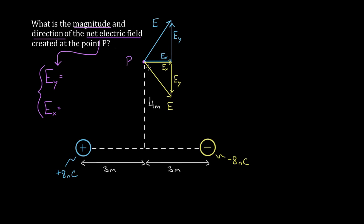We're kind of in luck because there's a certain amount of symmetry in this problem. Both charges have the same magnitude, and because point P lies directly in the middle of them, the distance from the positive charge to point P equals the distance from the negative charge to point P. So both charges create an electric field of equal magnitude at point P — the fields just point in different directions. The positive charge creates a vertical component upward, and the negative charge creates a vertical component downward of the same magnitude.